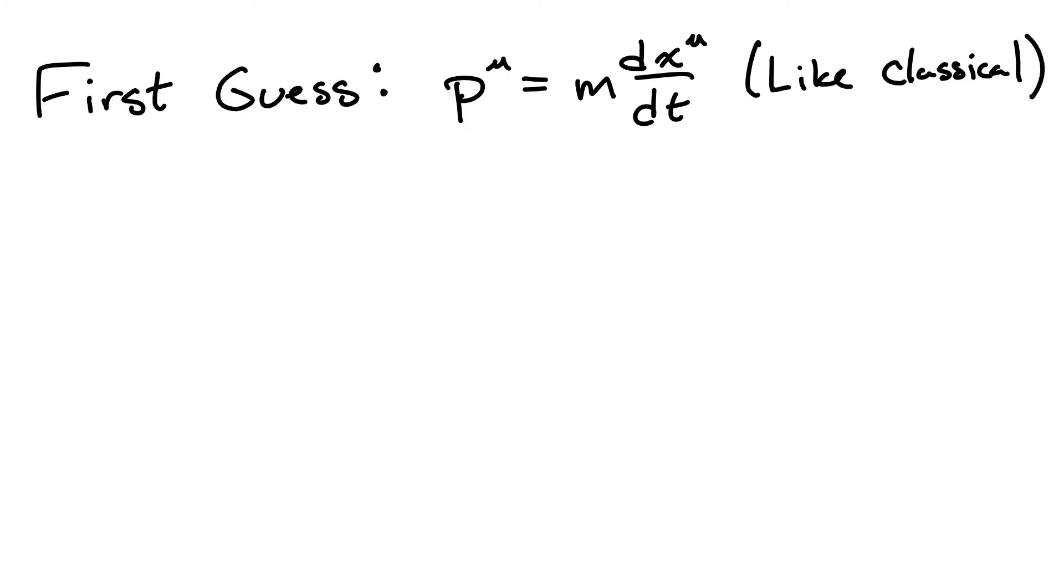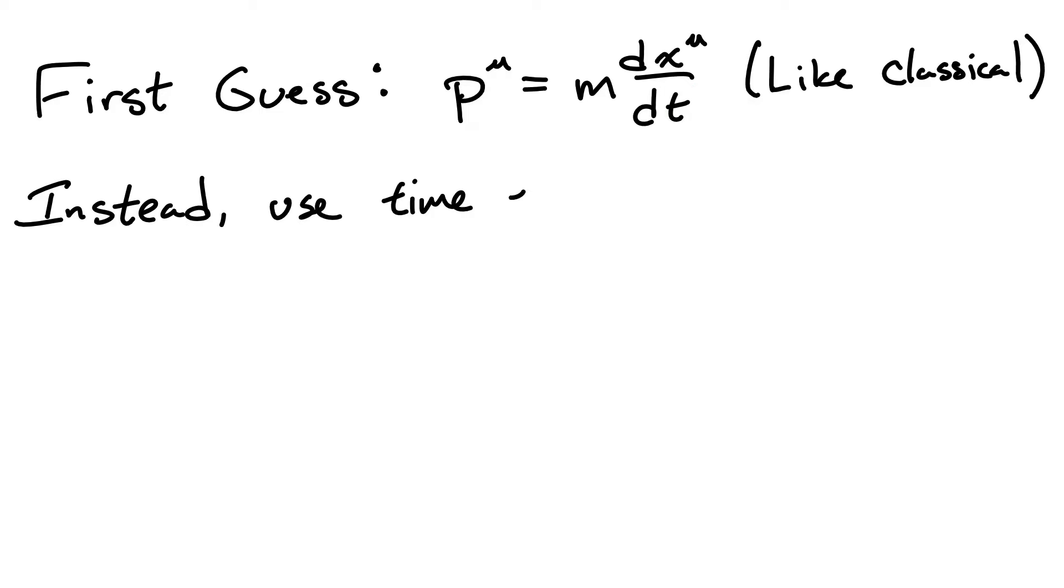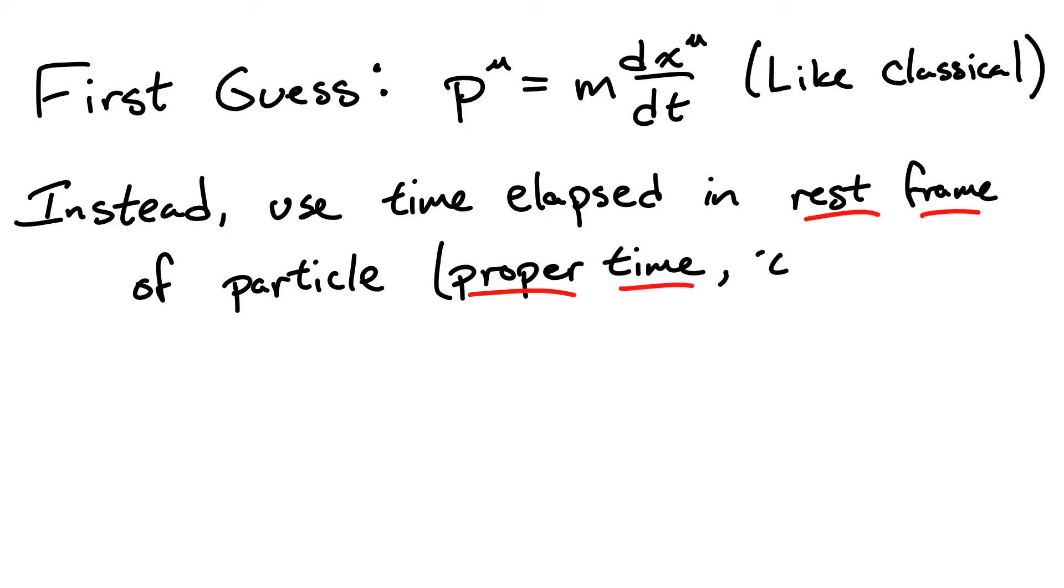In Newtonian mechanics, the definition of time was the same for all observers, but when using special relativity, time and space rotate into each other when relating reference frames. So looking at a change in time in one frame is the same at looking at some combination of a change in space and a change in time in another frame. So instead, we need to use a time that all observers can agree on. As it turns out, really the only choice that makes sense is the amount of time that elapses in the rest frame of the particle itself instead of any one observer. This is typically called proper time and denoted with a tau instead of a t.